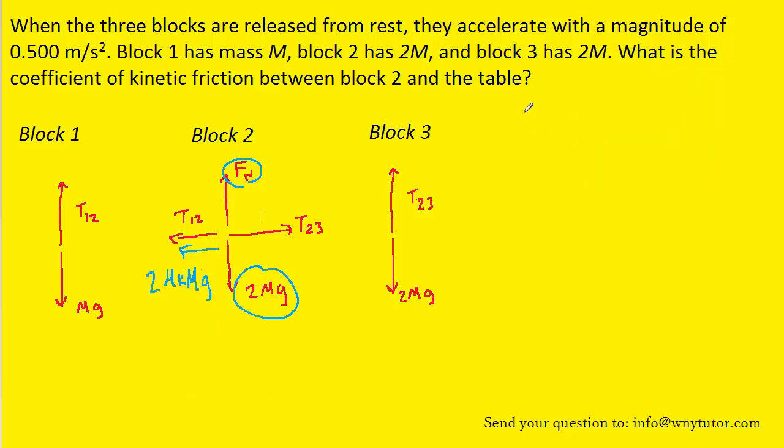We can next apply Newton's second law to all three blocks separately. For example, for block one, the sum of the forces would be the positive tension force added to the negative gravitational force. Block two is accelerating in the x direction, so we have the positive T23 force and the negative T12 and kinetic frictional forces.